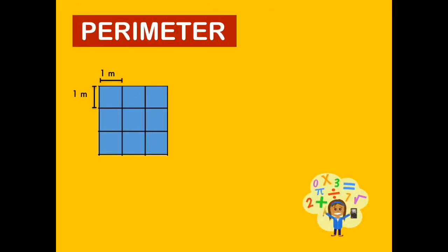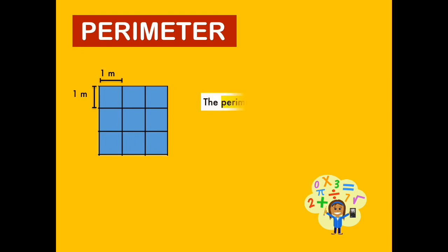Let's keep going. Look at the given figure below. The figure being shown is made up of 1 meter squares. What is the perimeter of the given figure? The perimeter of the given figure is 12 meters. The area of the given figure is 9 square meters.